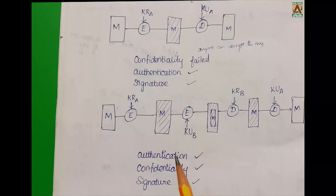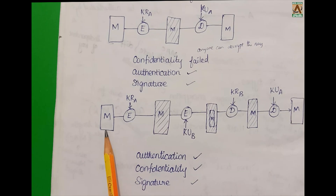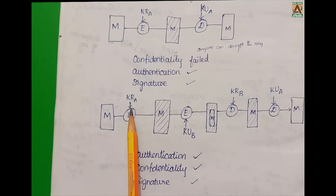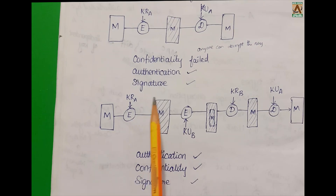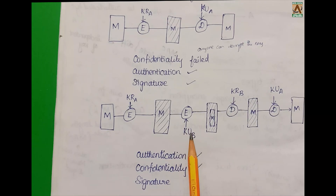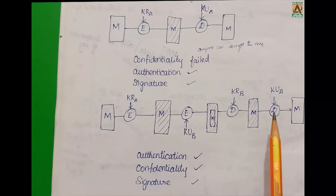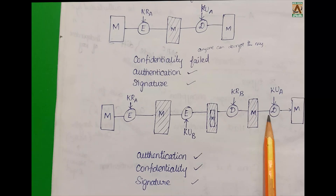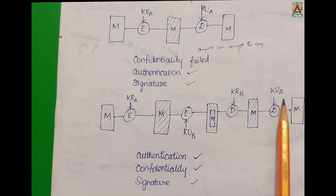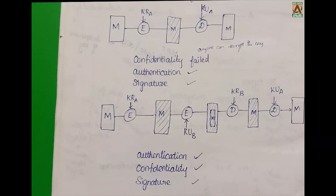To achieve both confidentiality and authentication in one diagram, we use double encryption: first encrypt the message with the private key of User A, then re-encrypt using the public key of User B. To decrypt: first use the private key of User B, then use the public key of User A. This achieves both authentication and digital signature. This completes Message Encryption.